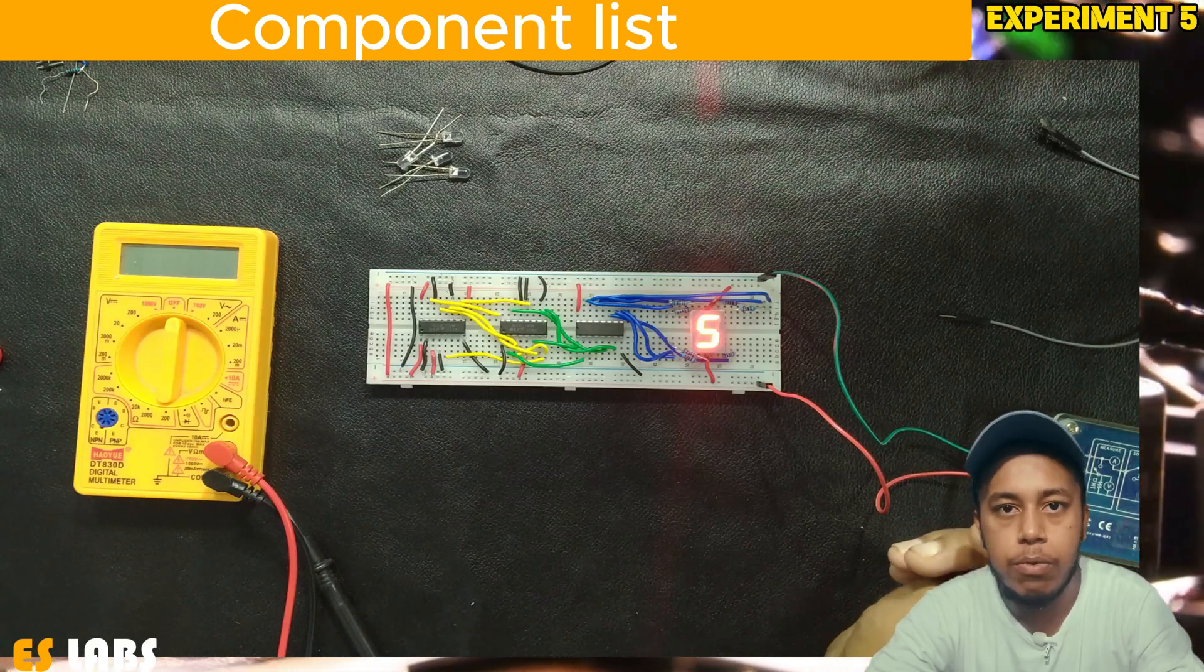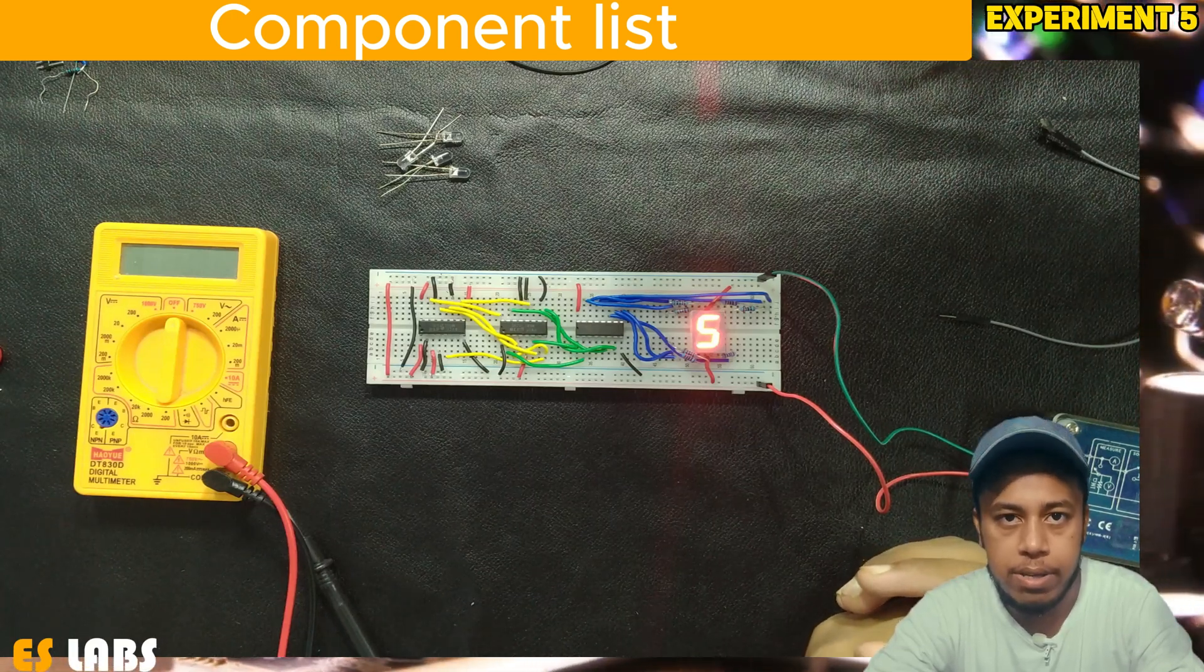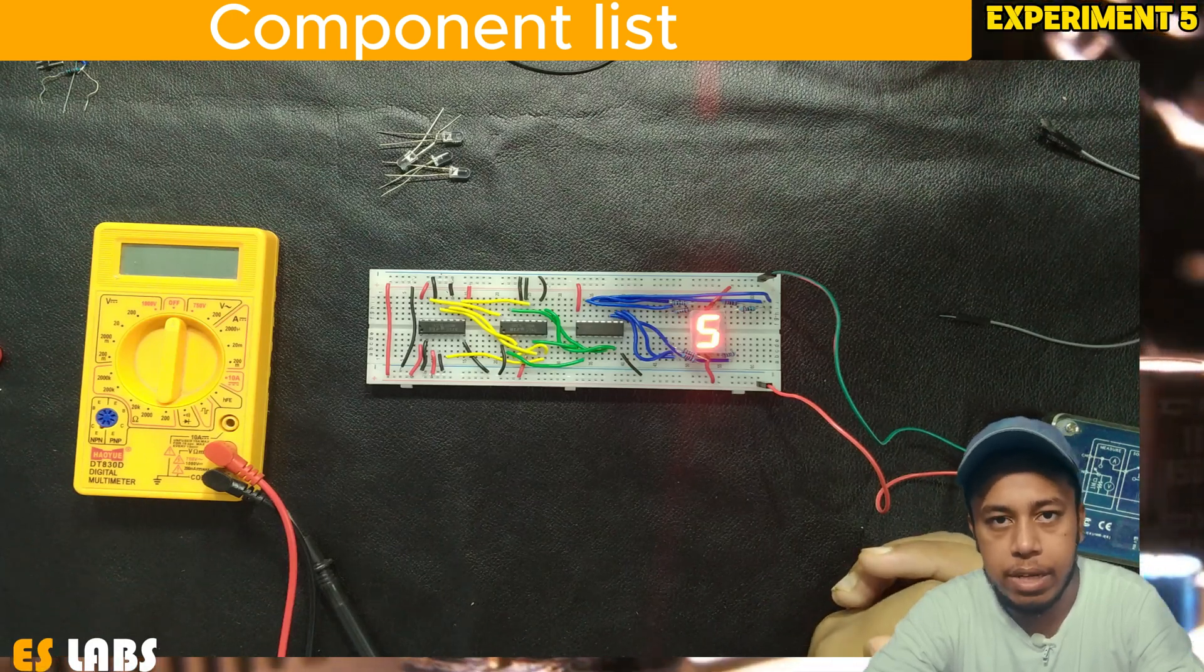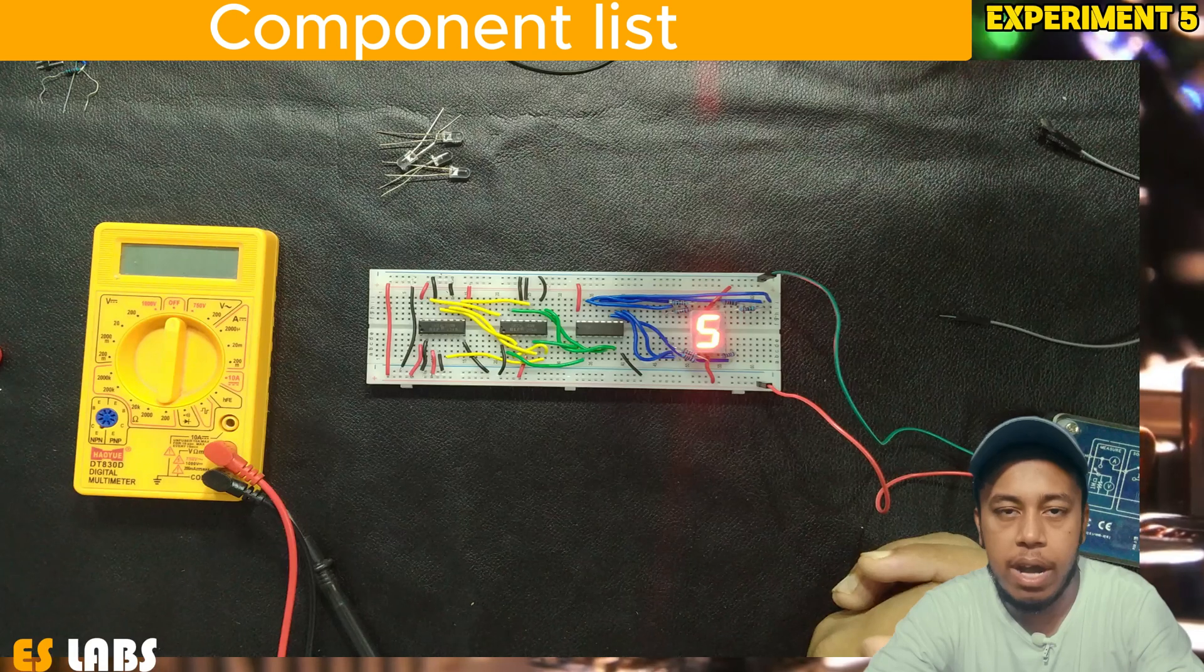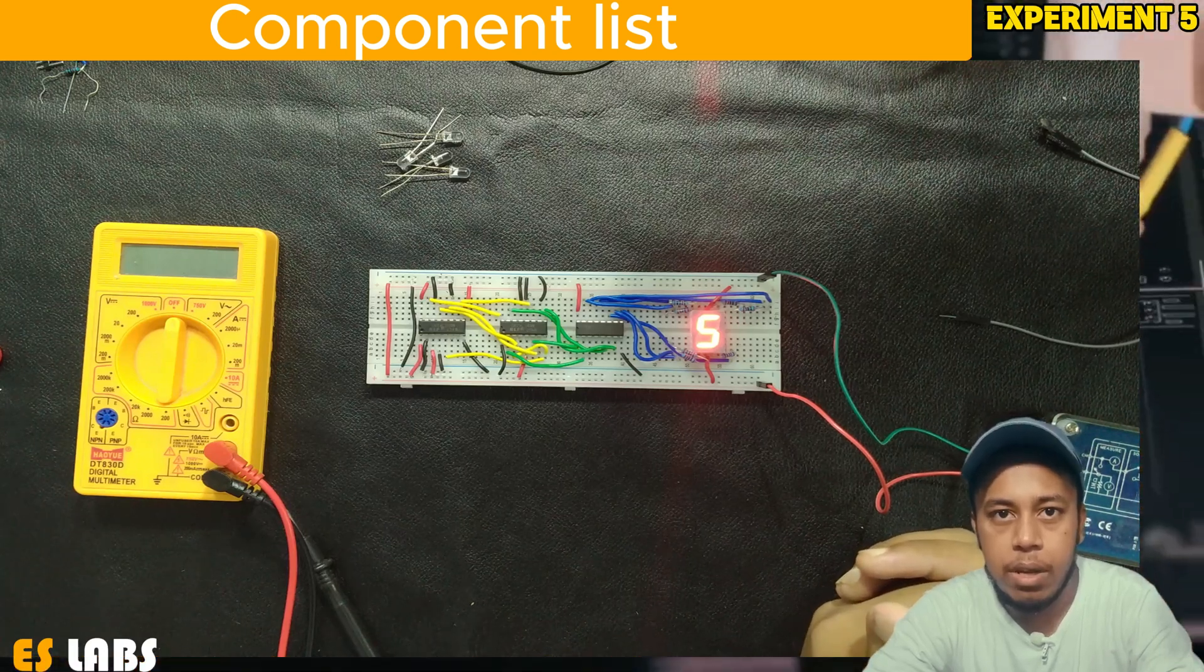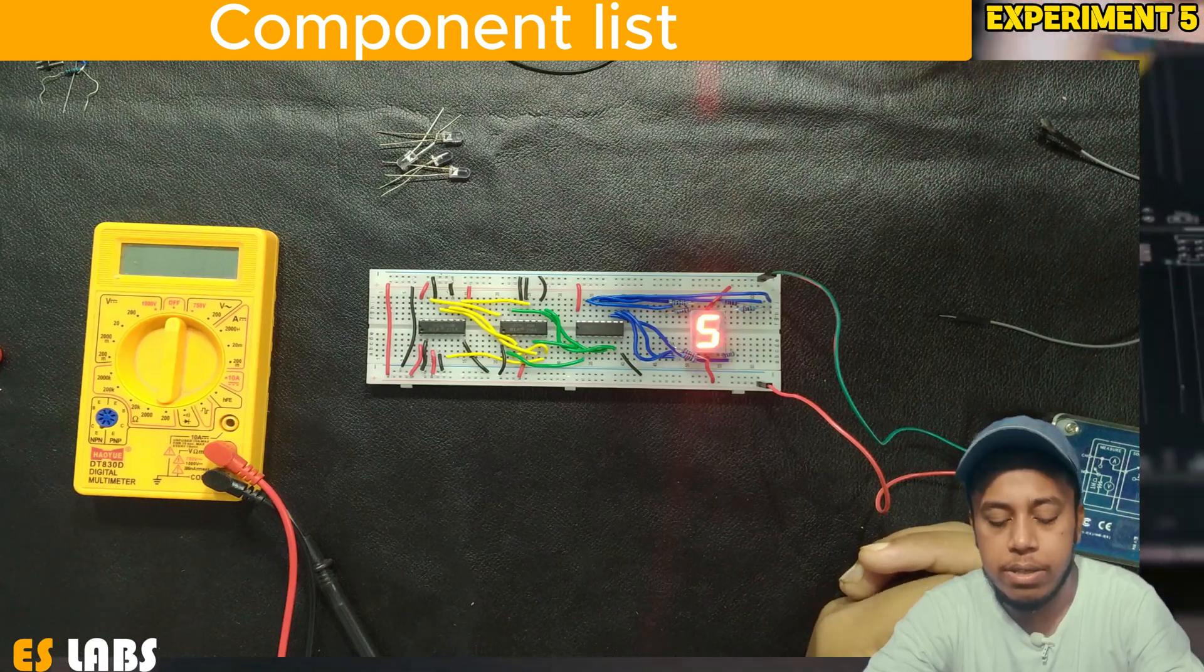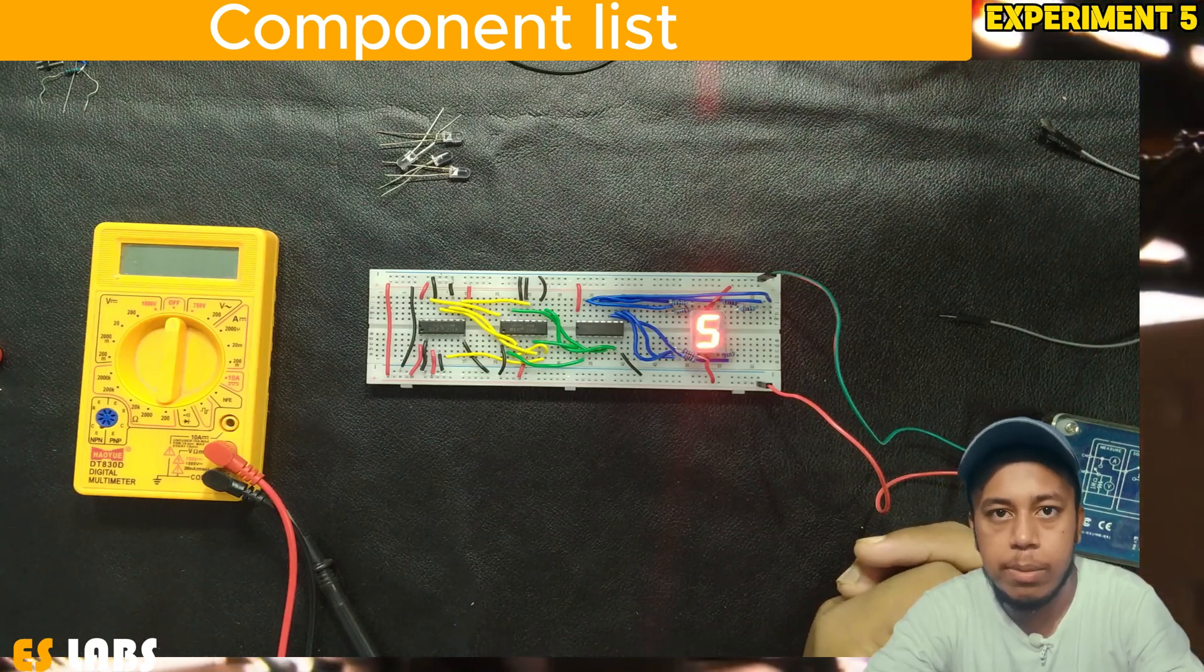So for this experiment we need four components. The first component is IC 74LS85, second is IC 74LS83, third component is IC 74LS47 which is the seven segment driver, and the fourth component is our seven segment display.